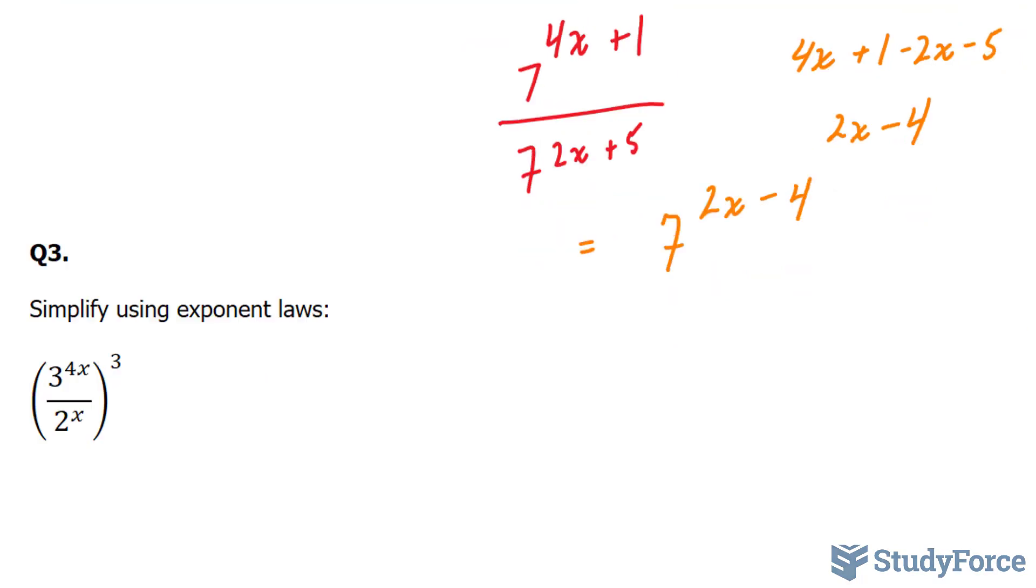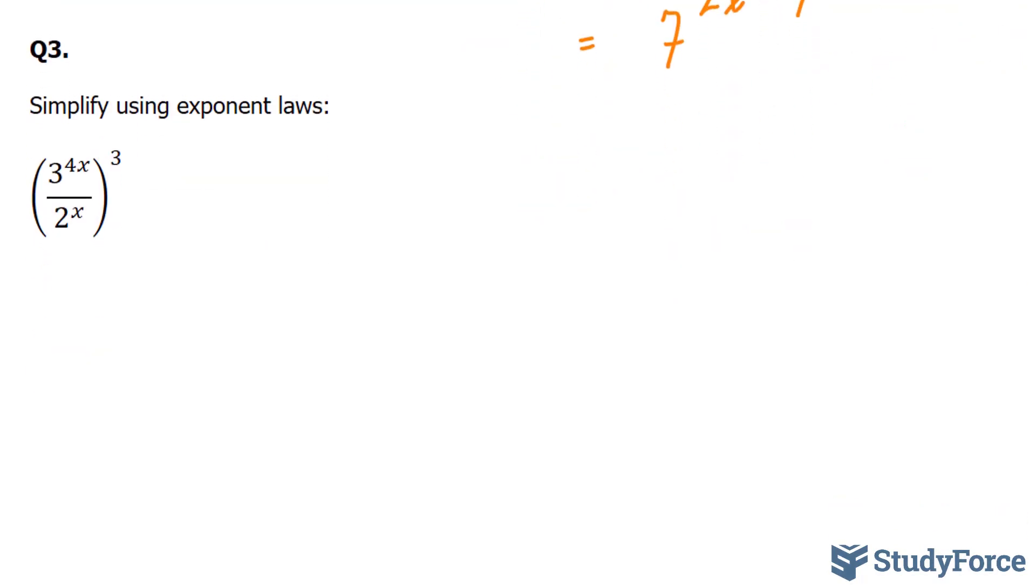Let's continue on to question number 3. Question number 3 asks us the same thing. They want us to simplify using exponent laws. In this case, you have an exponent at the very outer part of the expression. This means you will be distributing this to both the top and the bottom.